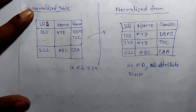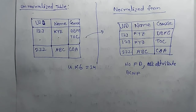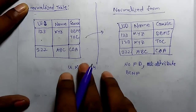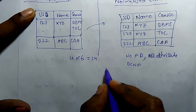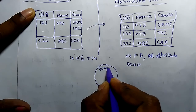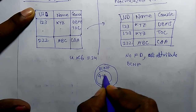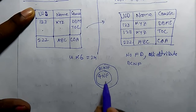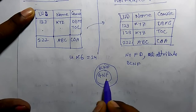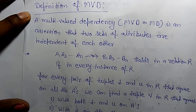We find repetition of the same UID and same name for different courses. Now we are going to learn Fourth Normal Form, and for that we have to learn multivalued dependency. 4NF lies beyond BCNF and has more restrictions compared to BCNF.